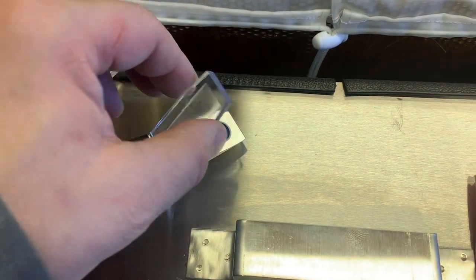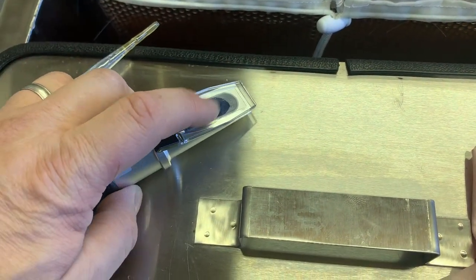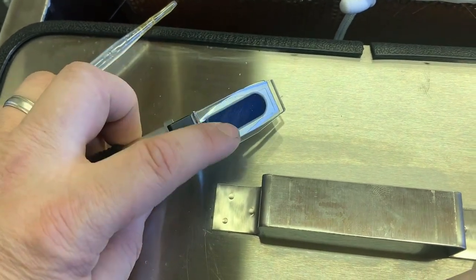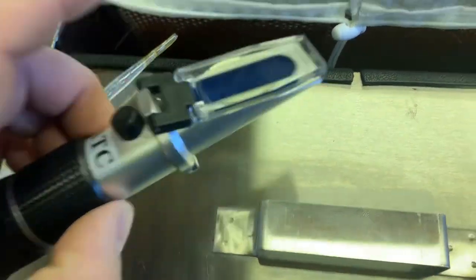Now we're going to close the lid of the refractometer and press it so it encompasses the whole area. You can see the honey spread out on the blue area.